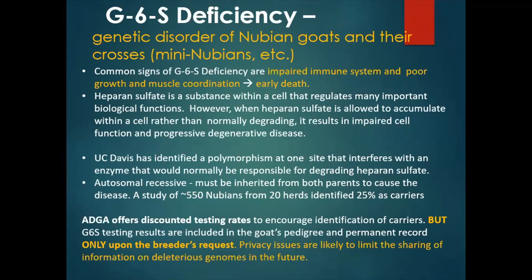If an animal has inherited this polymorphism, it must inherit it from both parents because the gene action is autosomal recessive. If it has only been inherited from one parent, the animal will be a carrier that shows no symptoms of G6S deficiency but can pass on the disease if bred to another carrier. A study of 550 Nubians from 20 herds identified about one fourth of them as carriers.